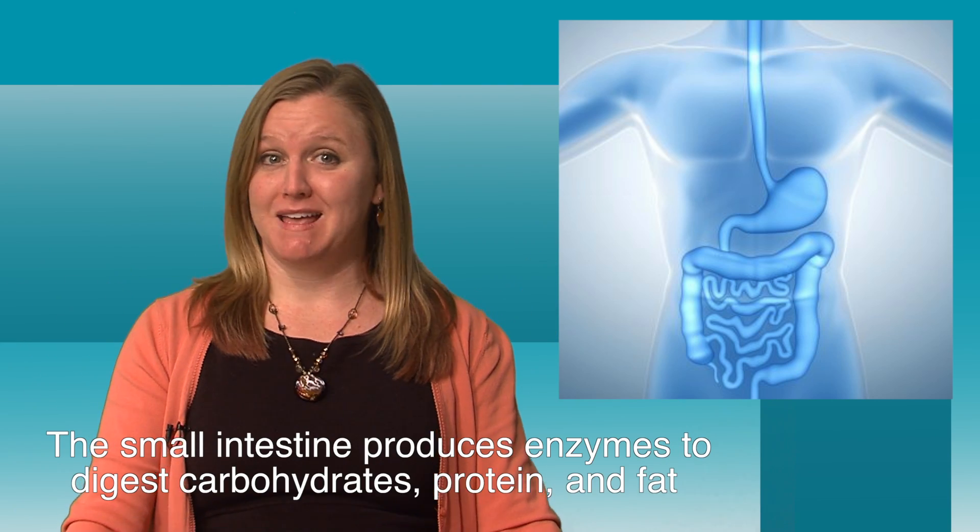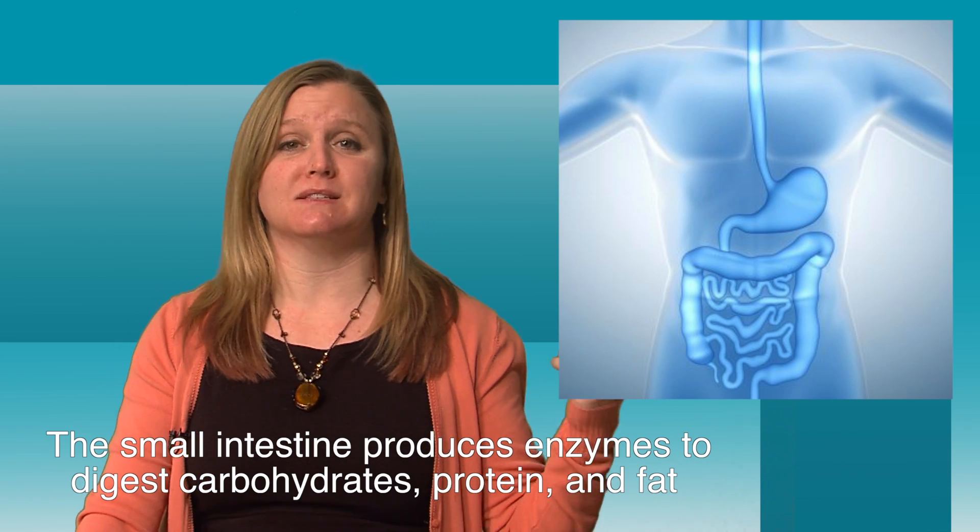Chyme then leaves the stomach and enters the small intestine, the site for the majority of digestion and absorption. The small intestine is where it's at. It produces enzymes to digest carbohydrates, proteins, and fat. With the help of enzymes from the pancreas and bile from the liver, all the needed macronutrients are digested and then absorbed in the small intestine.